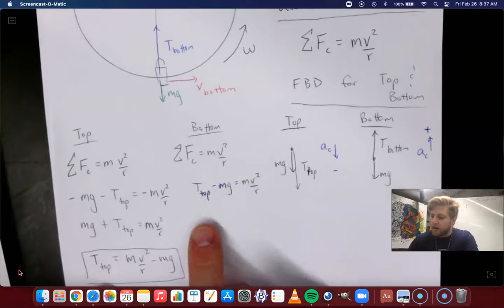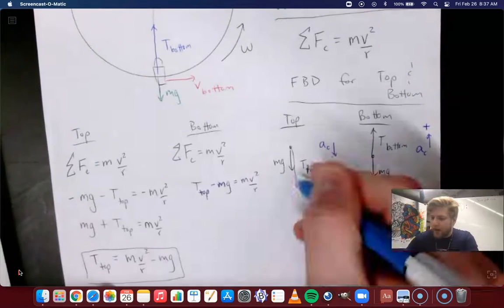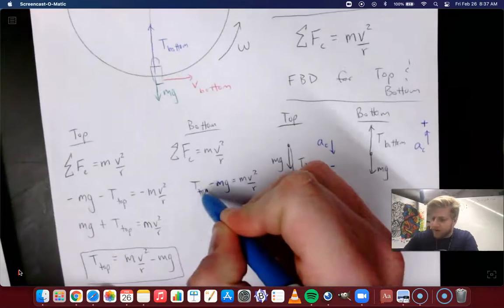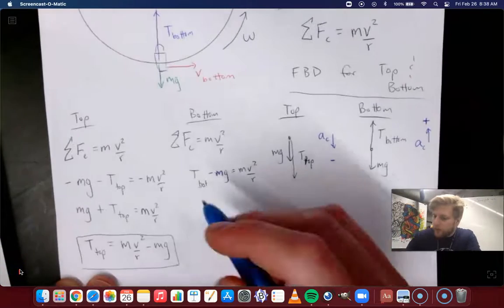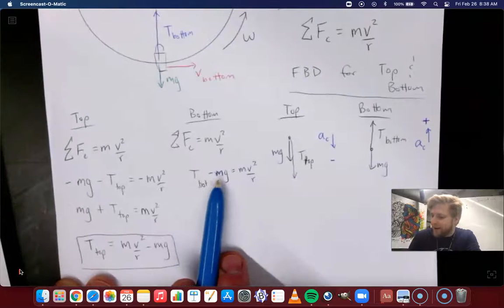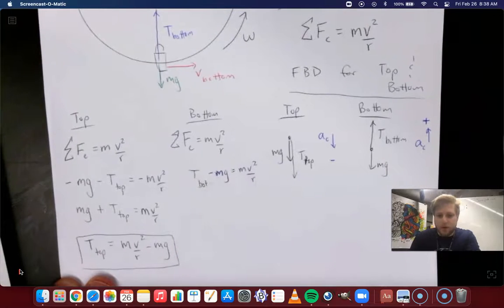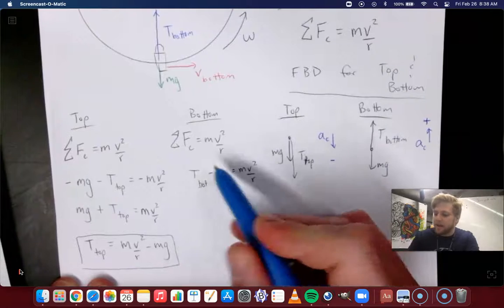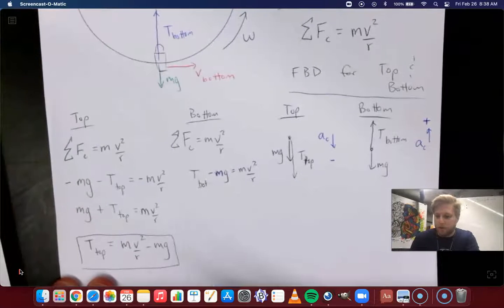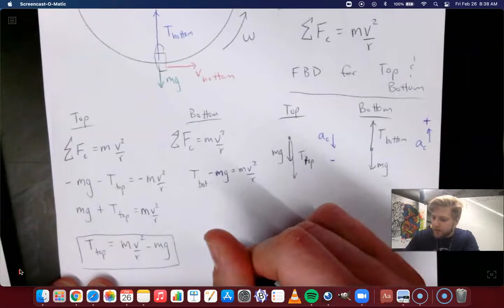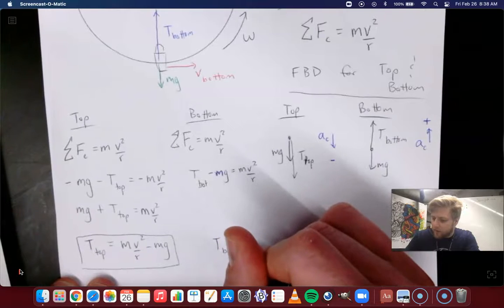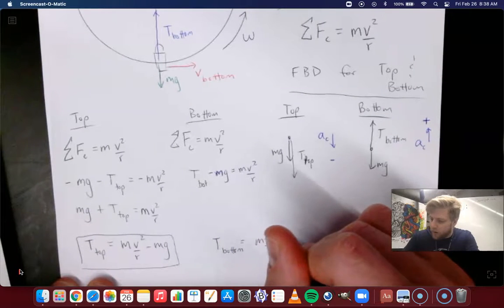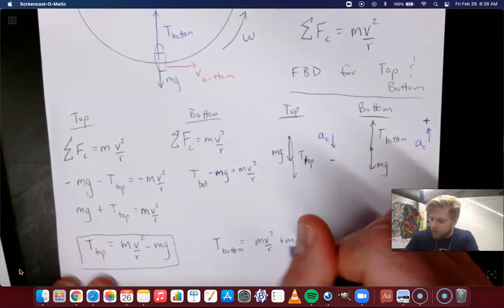So from there, again, all we have to do is the one step, add mg to both sides, and we'll end up with t bottom. So I fixed it as t bottom minus mg is equal to mv² over r. So these things are the centripetal forces working together to keep it moving in a circle. All we have to do is add mg to both sides. So this would be the tension at the bottom of this circle is equal to mv² over r plus mg.